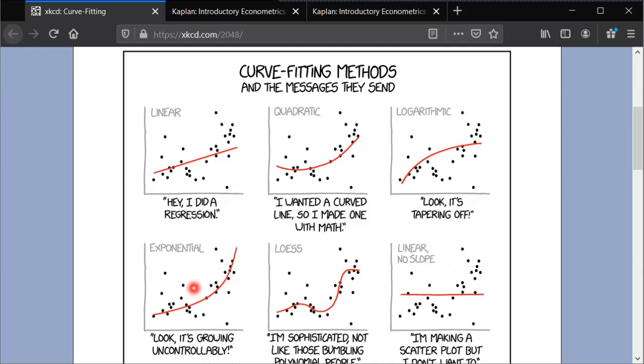So they're all showing the same data set but then different fitted regression lines. So here's a linear fit and a quadratic fit, a logarithmic fit, he calls it exponential. Here's a type of nonparametric regression. Here's just the intercept only model. The point is that you can have the exact same data set, but get very, very different results depending on the regression model that you specified.